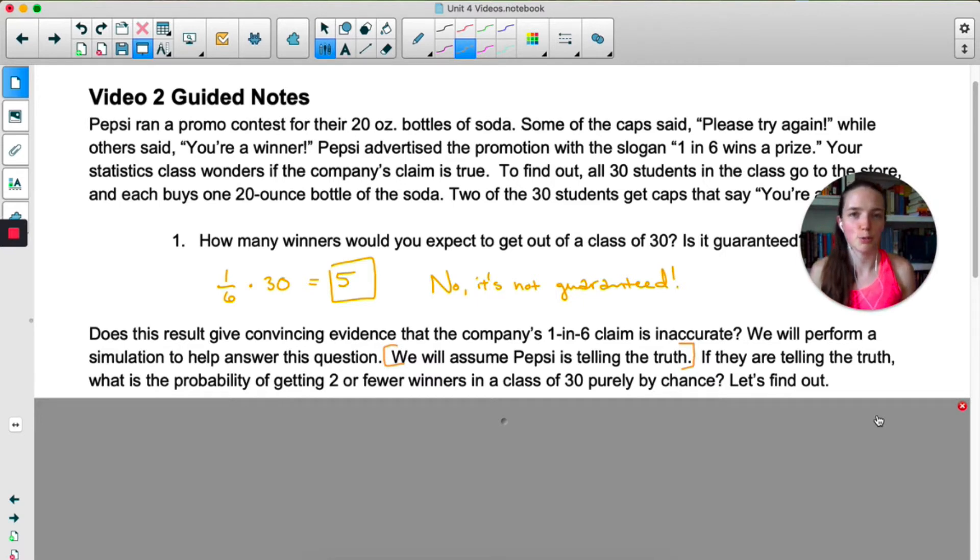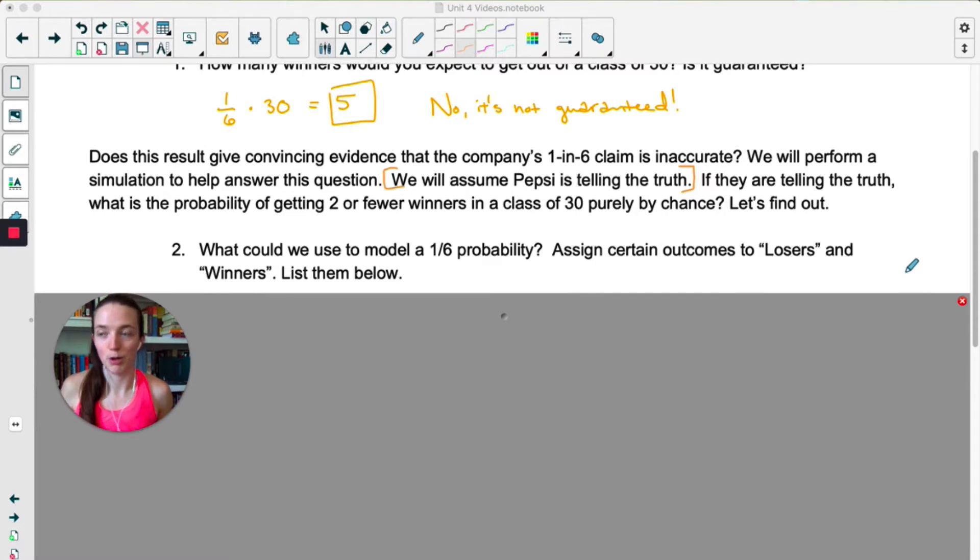This is a little bit like the scope of inference example that we did in the last unit where we start out by assuming that the one in six is accurate and we're going to see if that's accurate. How likely is it that we'd only have two winners in a class of 30? Now we don't want our students to buy bottles of pop over and over to see how often we have two winners. We want to come up with some kind of device to model the scenario.